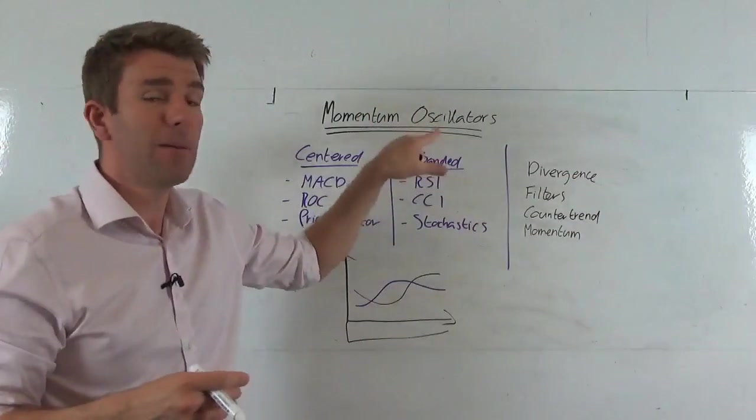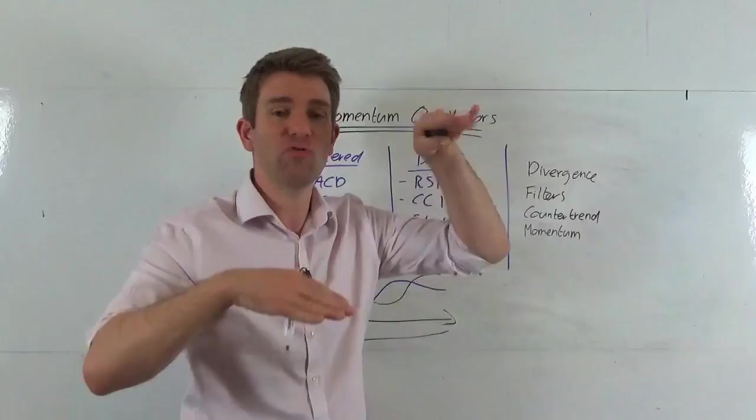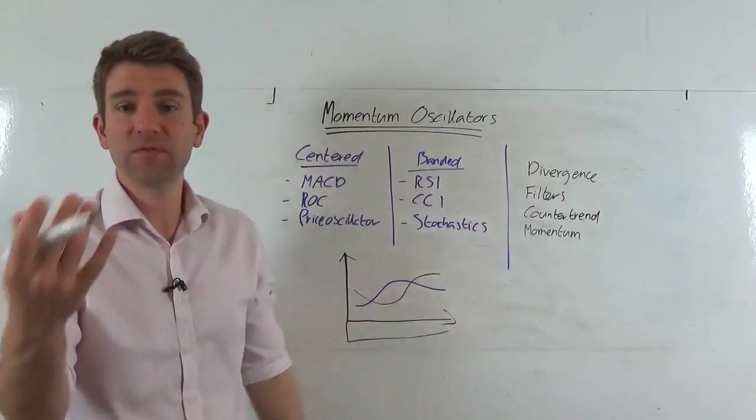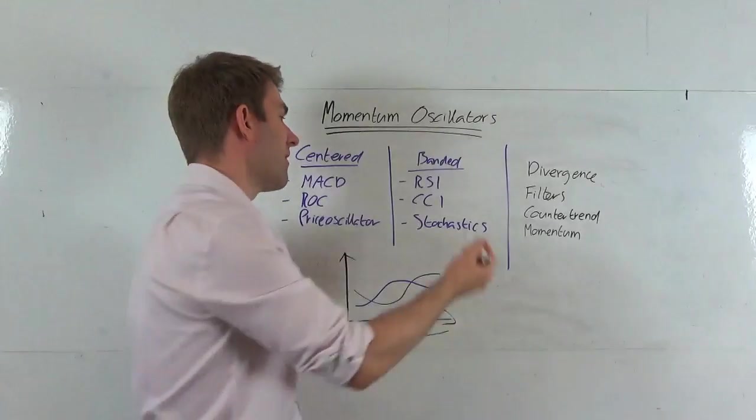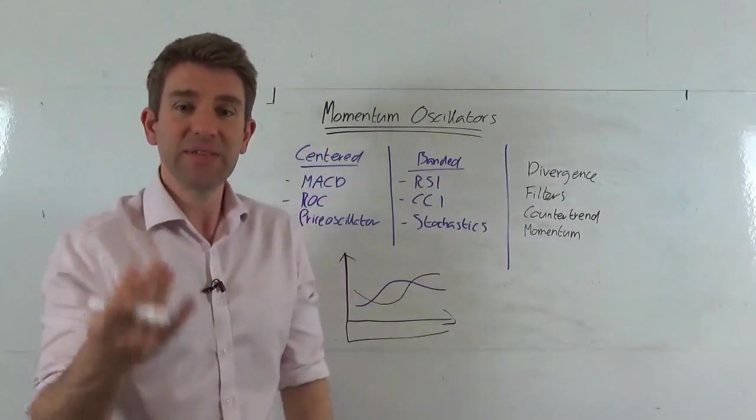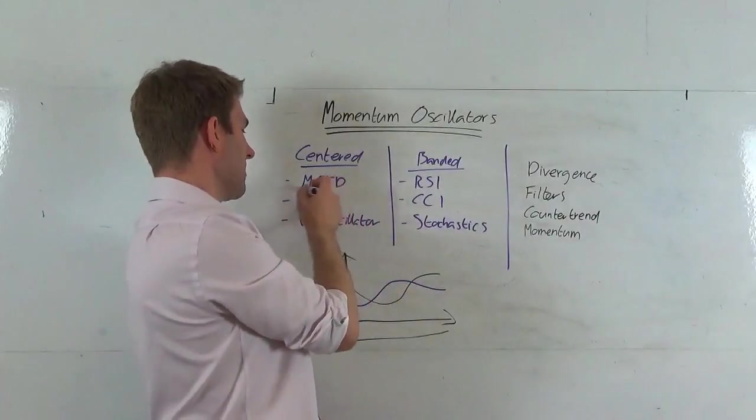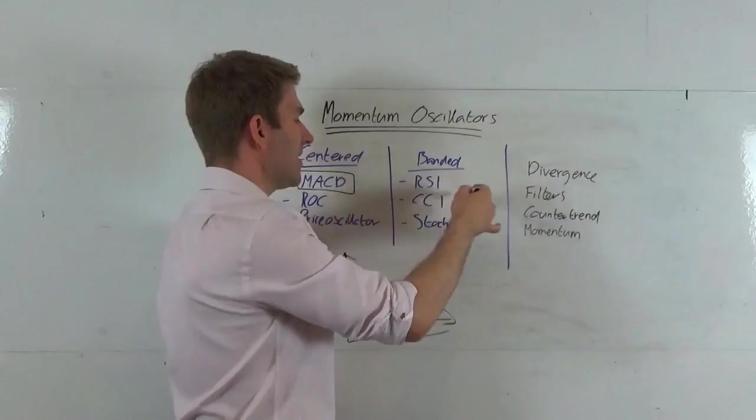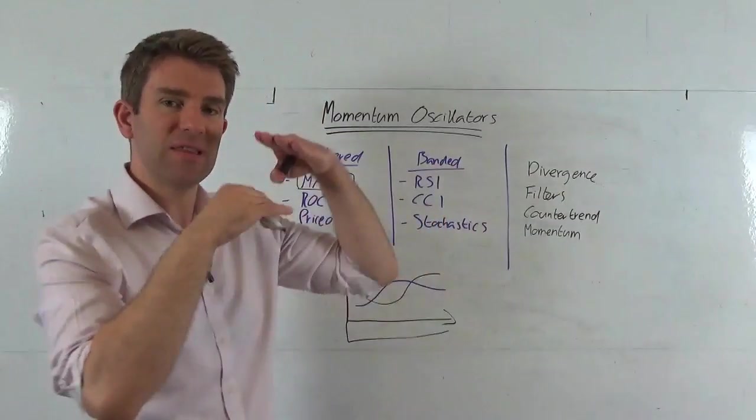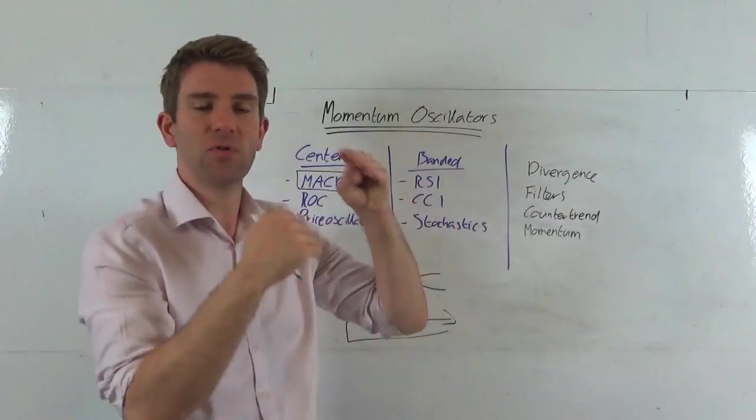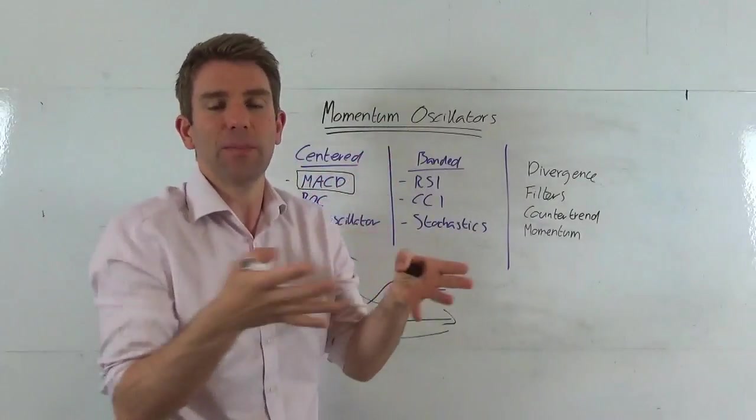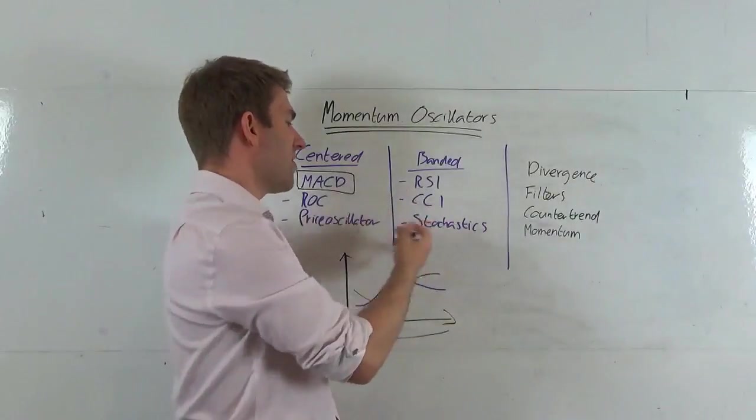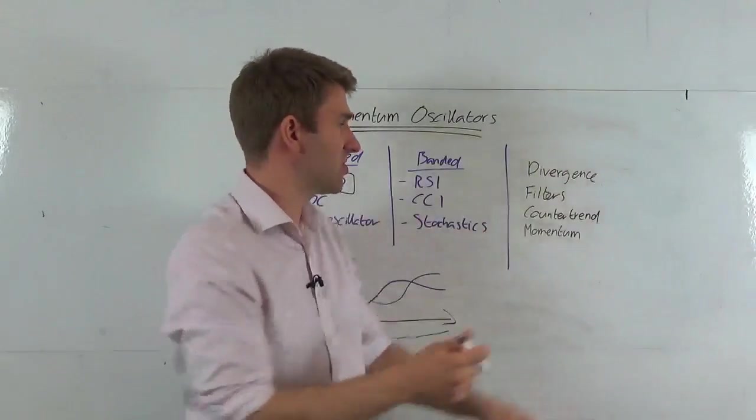Banded oscillators are constrained between 100 and minus 100 generally speaking. We've got what most of us are most aware of: the RSI, the CCI, and the stochastics. MACD is quite popular. I find a lot of guys use MACD. I like to use these kind of banded oscillators because of the definitive levels they go to. For me they're a little bit easier. Is it the right or wrong way to do it? There isn't the right way to do anything in trading guys.